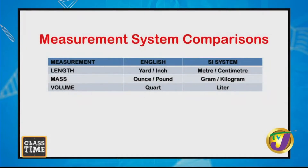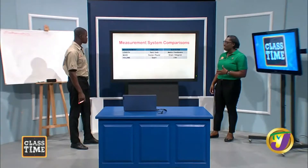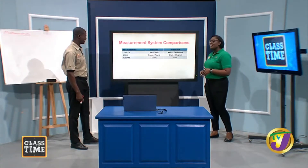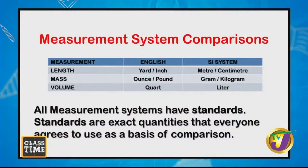Here we have a comparison between the English and the SI system. In the English system we use yards, inches, pounds, and quarts, while in the SI system we have meters, centimeters, grams, and liters. All measurement systems have standards — exact quantities that everyone agrees to use as a basis of comparison. There was an agreement among persons to standardize everything this way.